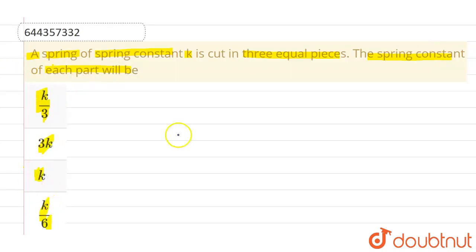So what we are given: suppose initially there was a spring with length l and spring constant k. Now this particular spring is cut into three equal parts. Let this one be the first part, this one be the second part and this one be the third part.